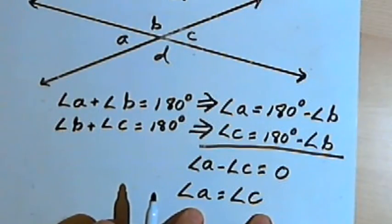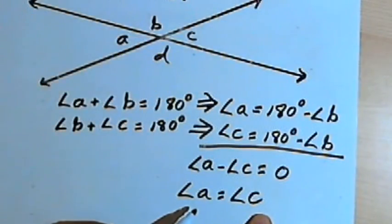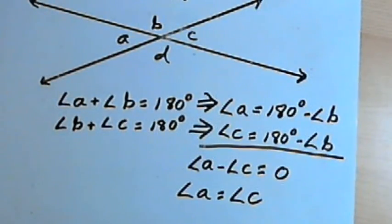So there's the proof that vertical or opposite angles will be equal to each other. That's it. Take care and I'll see you next time.